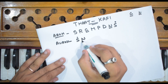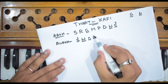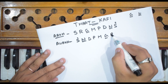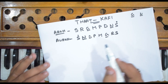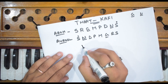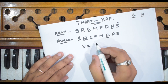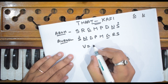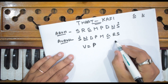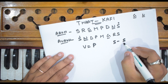And the avaroha is: Sa, Komal Ni, Dha, Pa, Ma, Komal Ga, Re, Sa. This is the aroha and avaroha of Thaat Kafi. The vadi swara is Shuddh Dha.